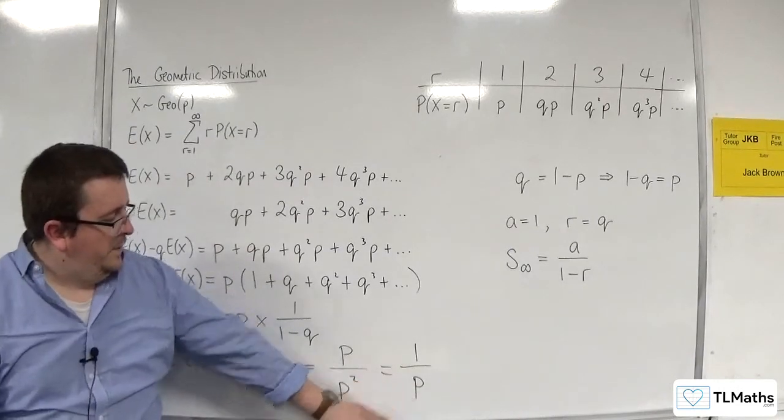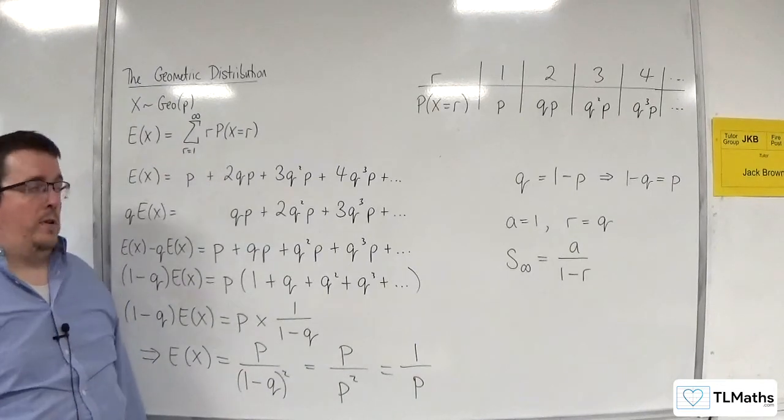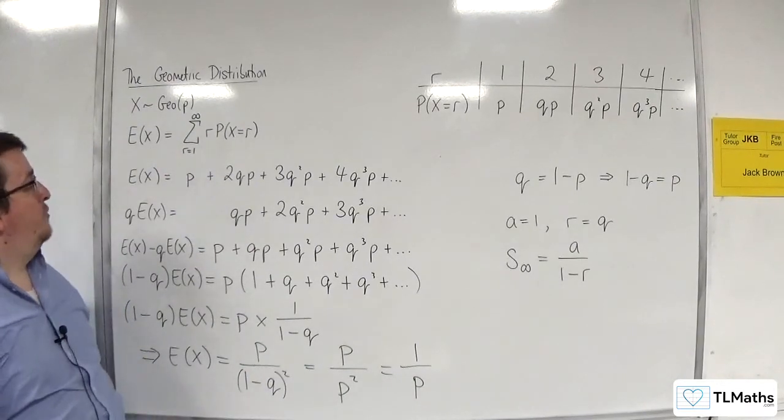And that is E(X) for a geometric distribution.